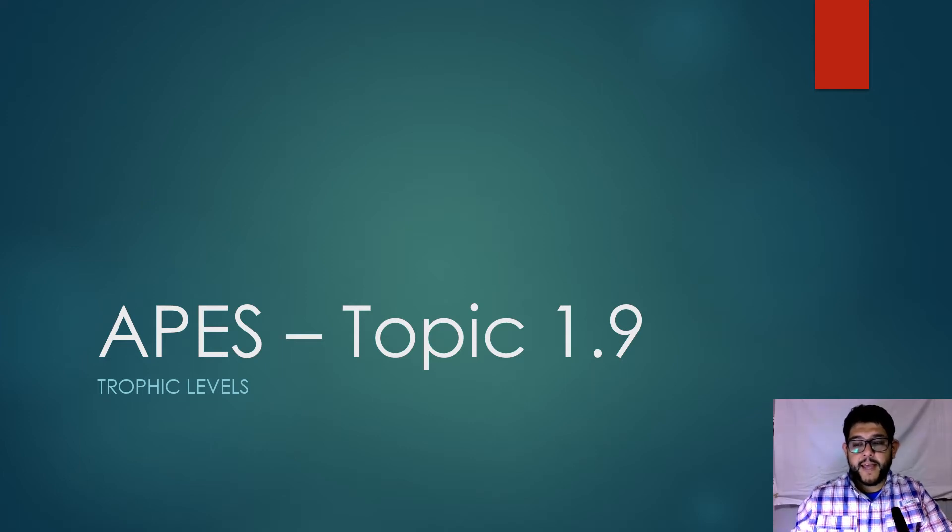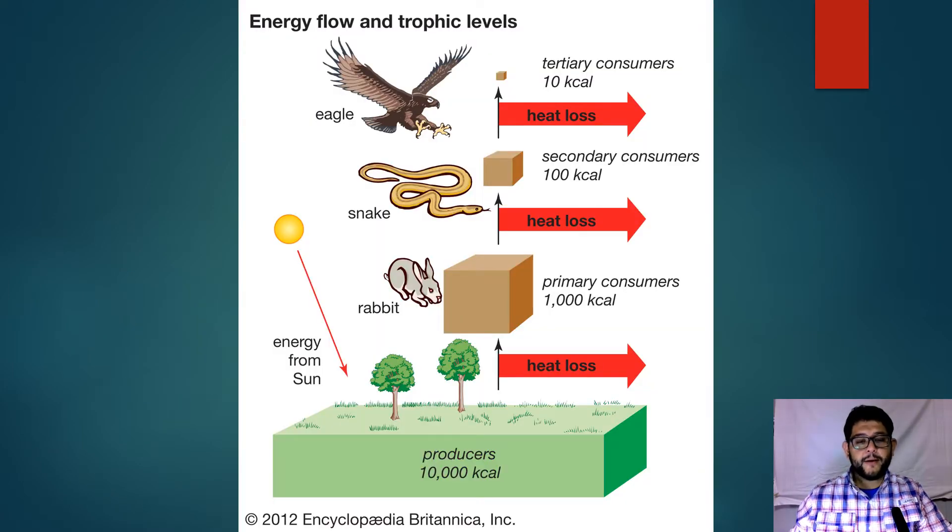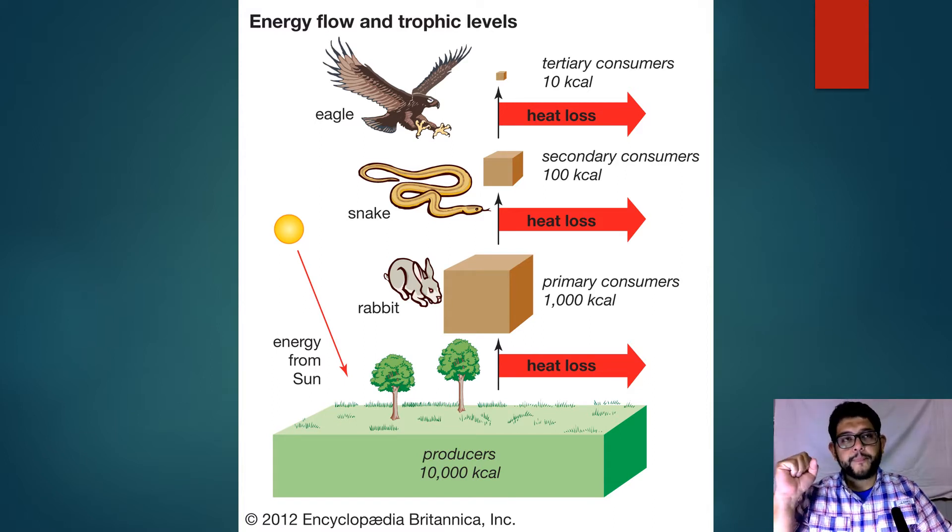Hi everybody, this is Mr. V and this is APES review video topic 1.9 trophic levels. So a little bit about trophic levels. You've probably seen some form of this pyramid or this information somewhere before. The idea is that you have different levels, you have producers at the bottom and you've got consumers at different levels going up, showing you how the energy transfers and moves.